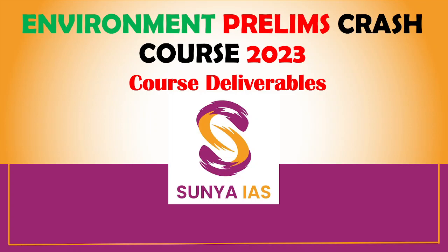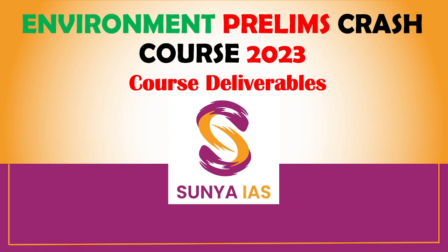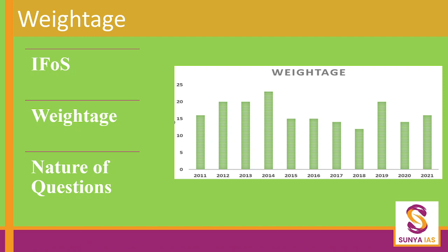I will try to answer that. Basically, the objective here is we want to maximize the number of questions which are asked from the Environment section. As you know, because the Forest Services Exam, its Prelims is merged, so the weightage of that is increasing. You can always expect somewhere around 18 to 20 questions from this section, which is a big number — 20 questions means almost 40 marks.